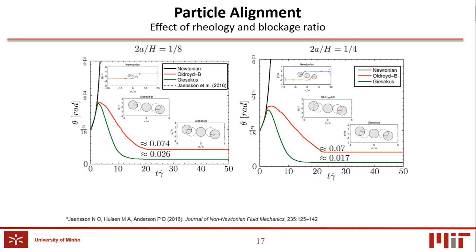Subsequently, the effect of rheology and blockage ratio on particle alignment is studied, using mesh 2 selected from the mesh convergence study. Concerning the effect of rheology, there is no particle alignment in the absence of normal stress difference with the Newtonian fluids, which are the black lines. However, the presence of normal stress difference promotes particle alignment, both for Oldroyd-B and Giesekus fluids, the red and green curves respectively.